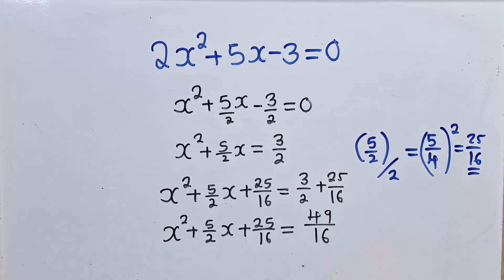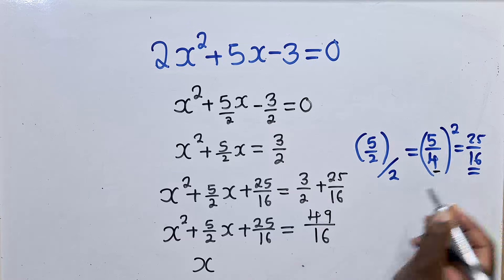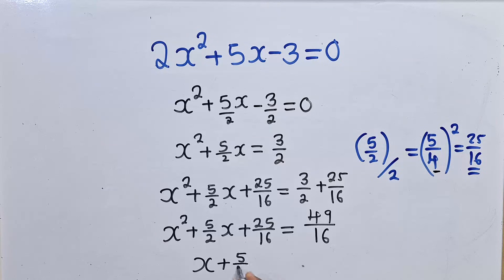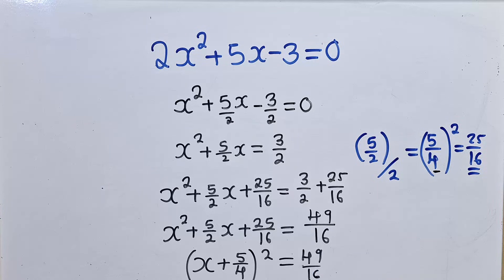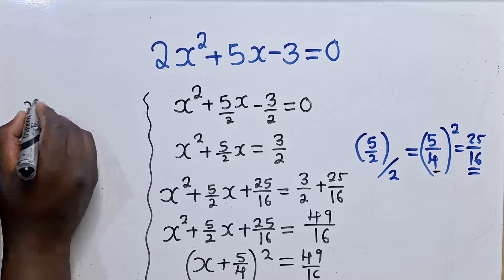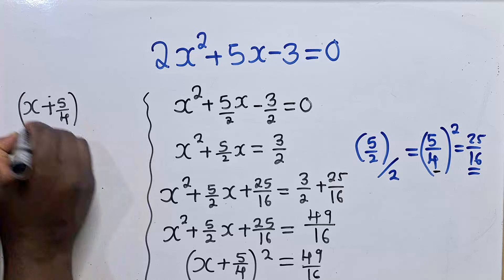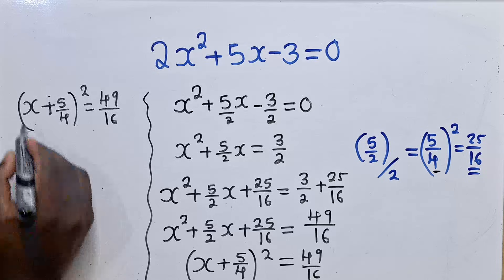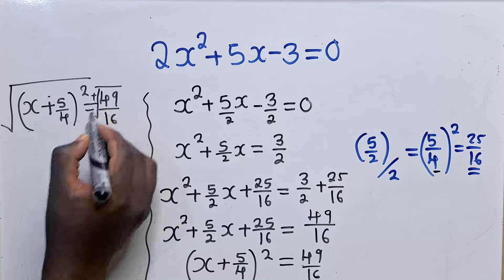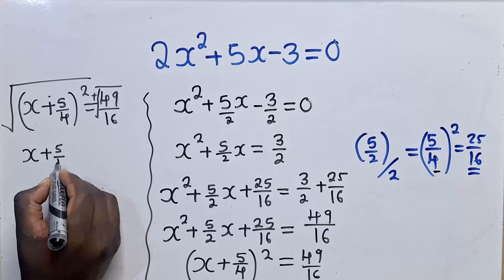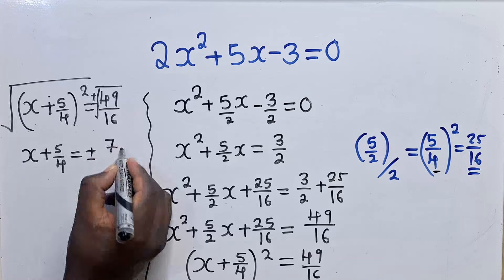Now from here we can write the perfect square. Since this side is complete, we write x plus the number which is inside — that is 5/4 — to the power 2, equal to 49/16. So we have (x + 5/4)² = 49/16. We now find the square root of both sides, which gives us x + 5/4 = ±7/4.